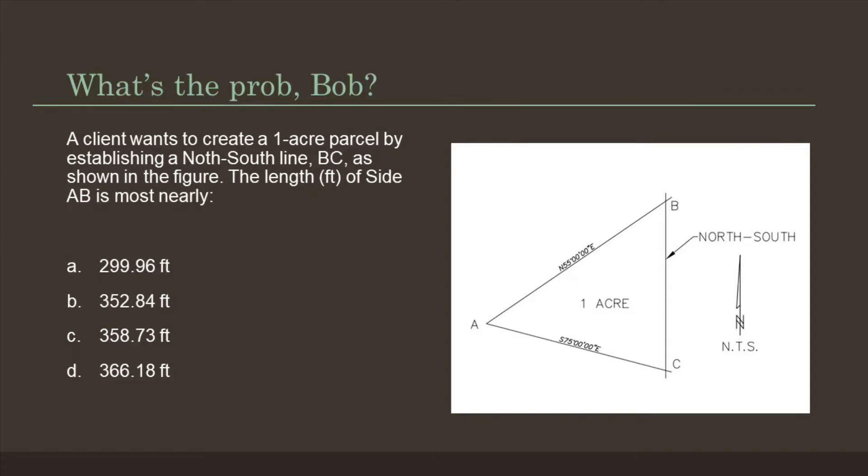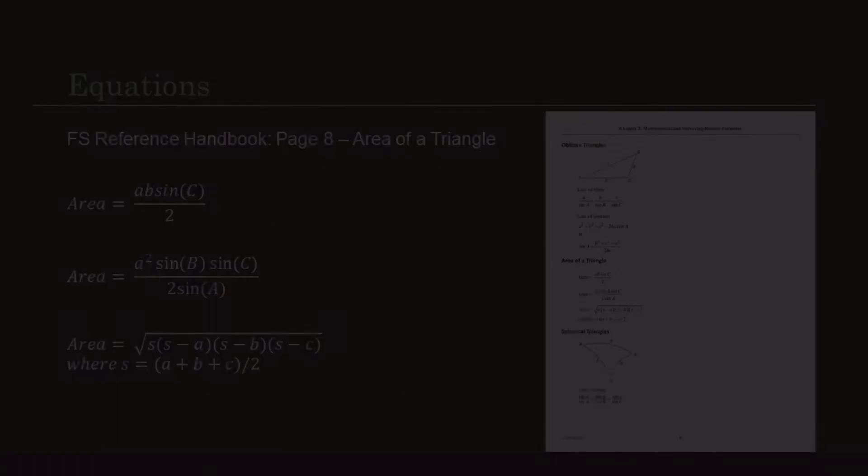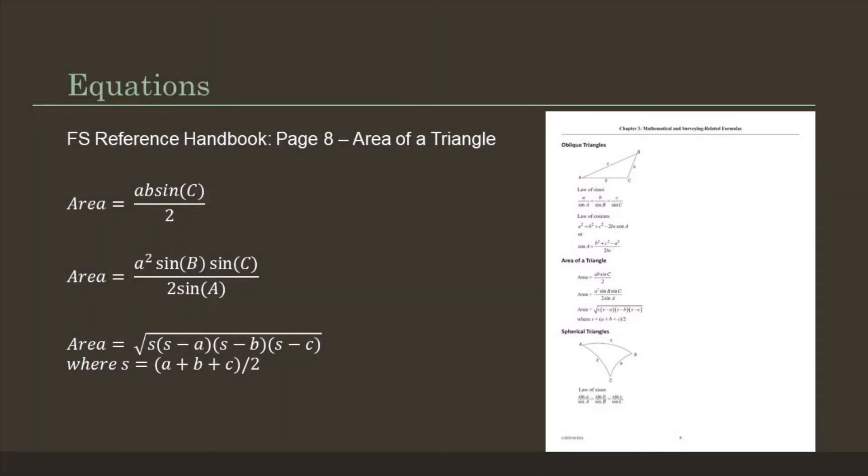Now let's talk about some equations. From page 8 of the FS Reference Handbook on area of a triangle, our first equation is area equals ab sin(C) over 2. Our second equation is a² sin(B) sin(C) over 2 sin(A). And our third is a whole bunch of mess we don't need to deal with. So let's get into solving this.